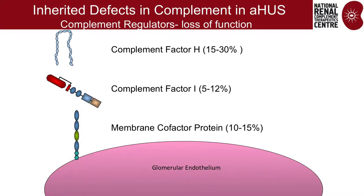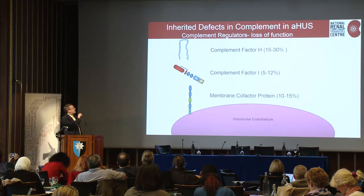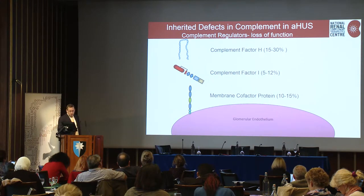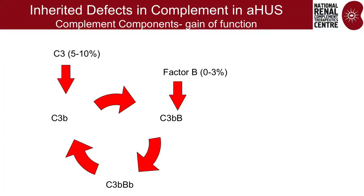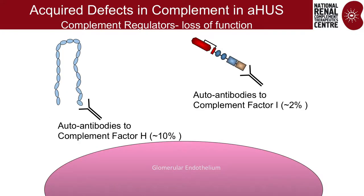To cut a long story short, we now know there are inherited defects in atypical HUS: loss-of-function mutations in factor H, factor I, and CD46, with factor H being by far the commonest, and gain-of-function mutations in C3 and factor B. We also have acquired defects with autoantibodies to factor H. So either you get decreased regulation or increased activation.